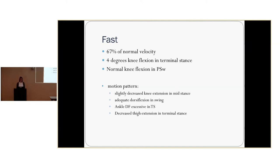The fast group is at 67% of normal velocity. They have four degrees of knee flexion in terminal stance — pretty close to what they should be — and normal knee flexion in pre-swing. Their motion pattern shows slightly decreased knee extension in mid-stance, adequate dorsiflexion in swing for limb clearance, excessive ankle dorsiflexion in terminal stance, and decreased thigh extension in terminal stance, meaning they're not getting as good a trailing limb angle.